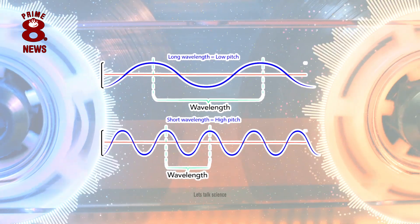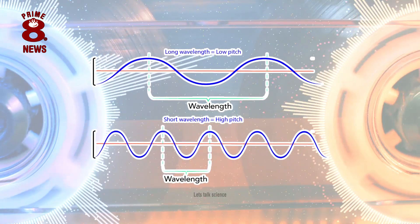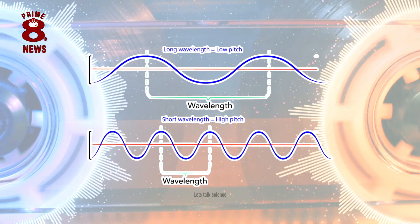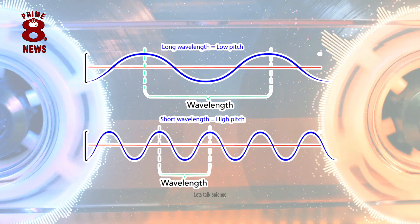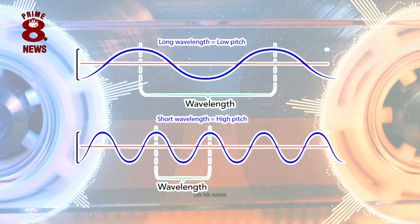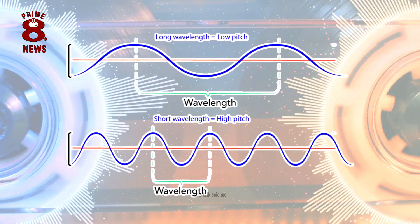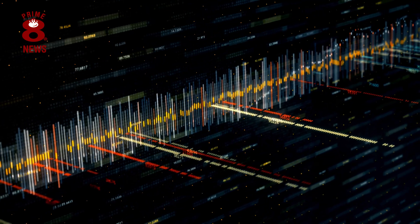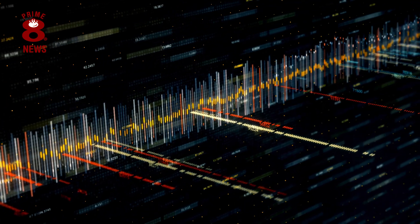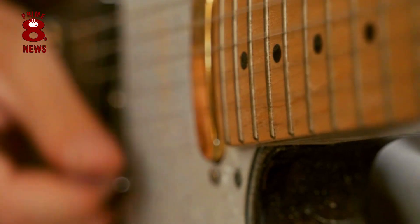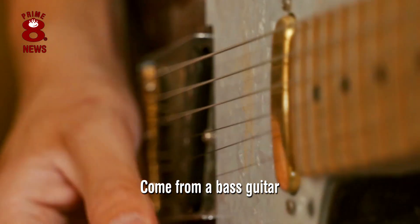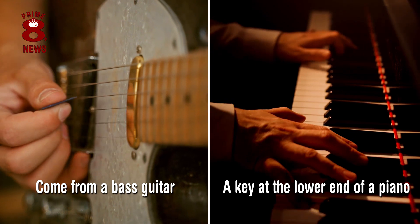Frequency determines the pitch of a sound, where high-pitched sounds have a high frequency, and low-pitched sounds have a low frequency. To give an example of this, imagine a very deep note, say one that would come from a bass guitar or a key at the lower end of a piano. This note has low frequency, meaning it is low-pitched.